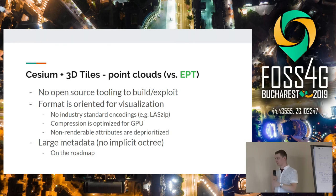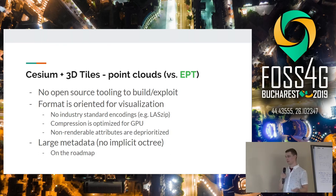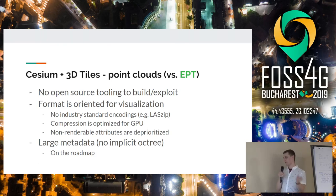One advantage of EPT over 3D Tiles is that you can build EPT with open source tools — Entwine. With Cesium, you need to use Cesium Ion for building. The format is more oriented toward visualization: you can't use standard LiDAR encodings, the compression is optimized for GPU, and non-renderable attributes are deprioritized. For example, uploading to Cesium Ion strips out things like GPS time, return number, and scan angle — all really important to people using LiDAR for derived products. Also, the metadata for equivalent EPT is much smaller because EPT is an implicit octree, while Cesium must explicitly list a lot of implicit things, though that's on their roadmap.